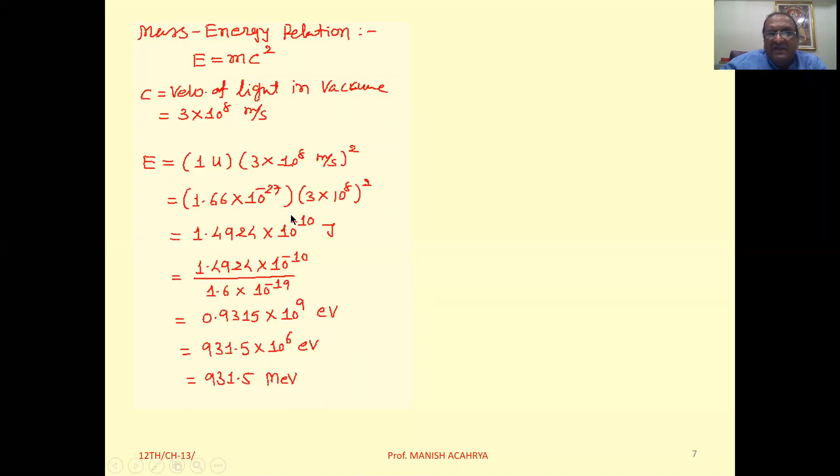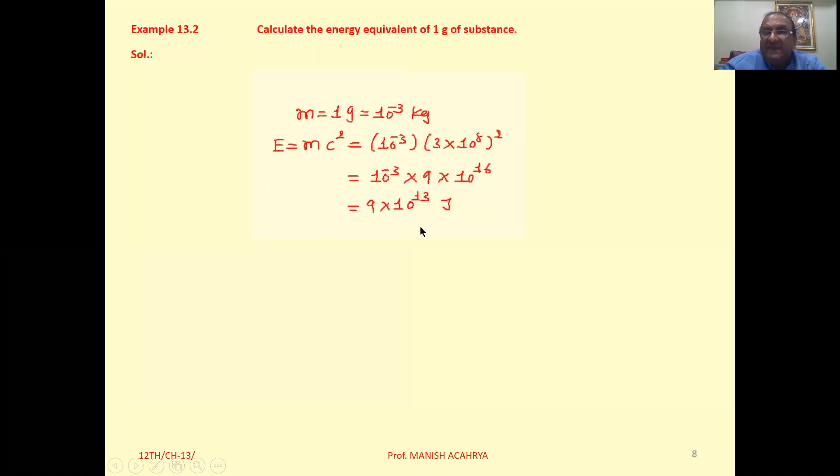So see, in this theory we discussed 1.66 into 10 raised to minus 27 kilogram is equivalent to 931.5 MeV. Then 10 raised to minus 3 kilogram is equivalent to how much energy?